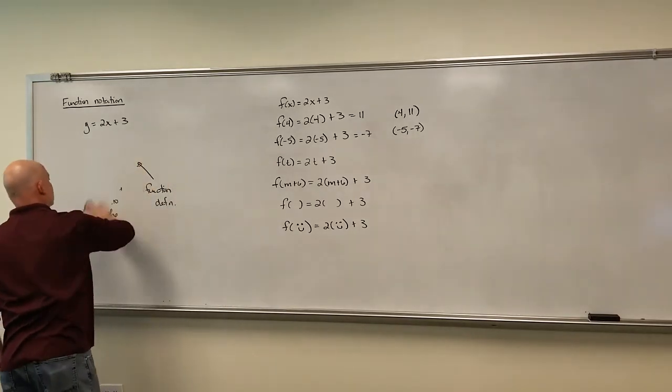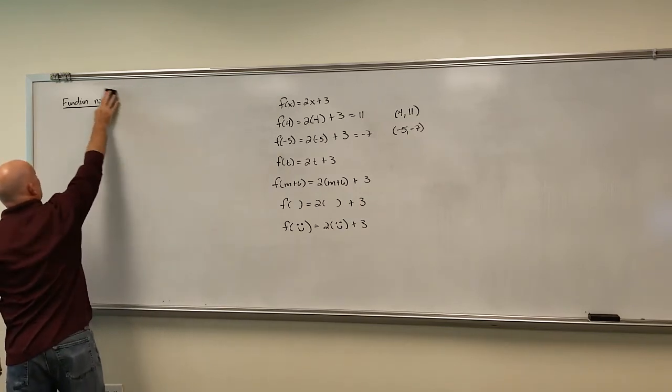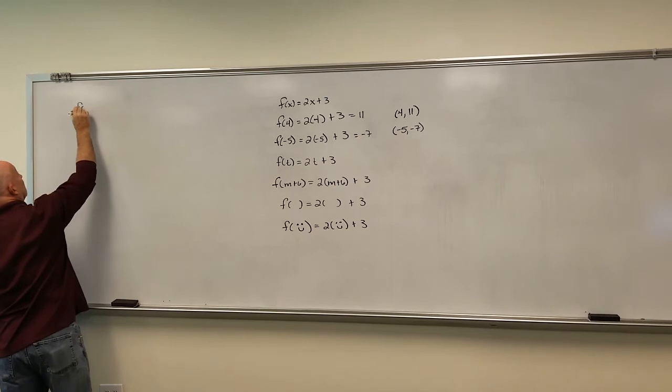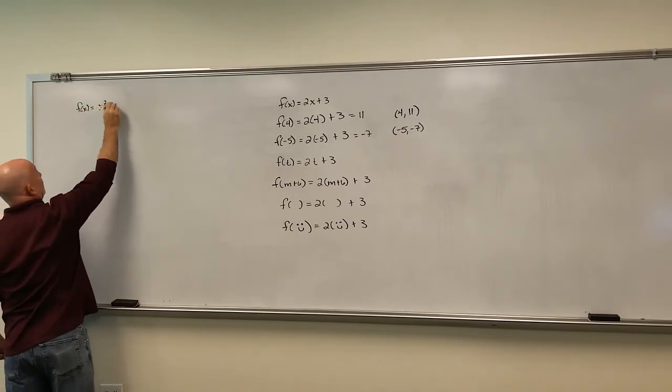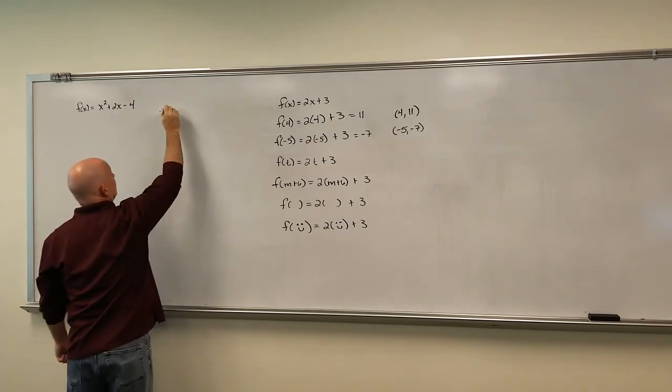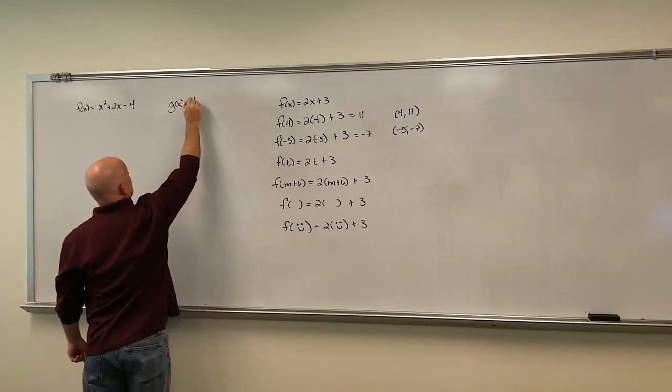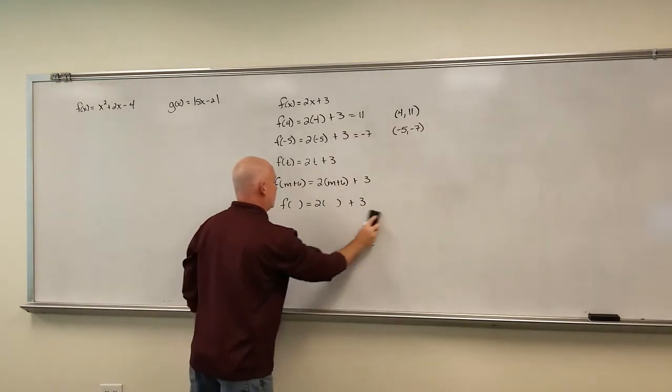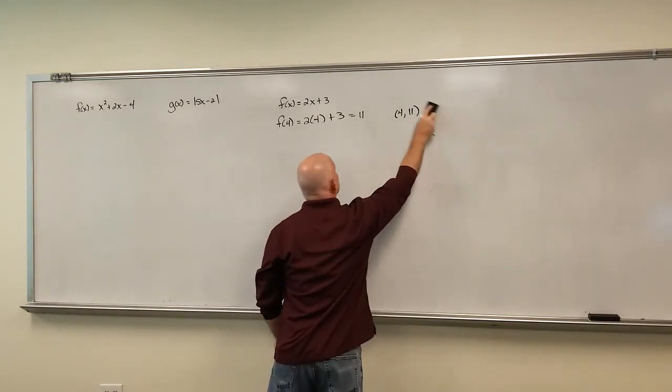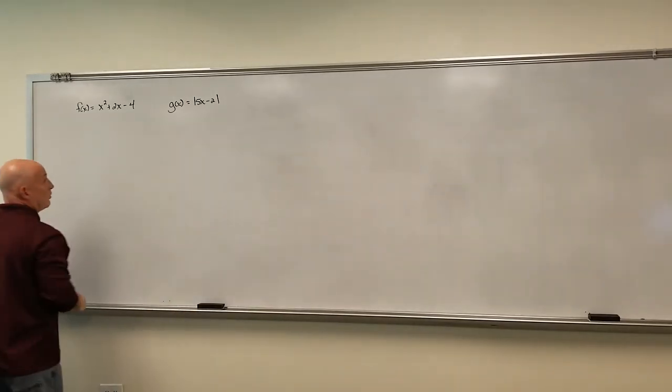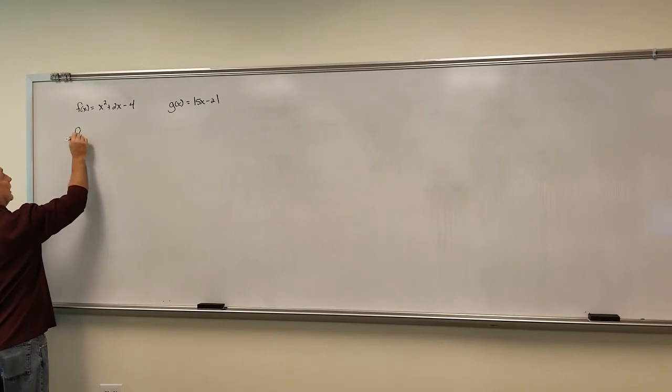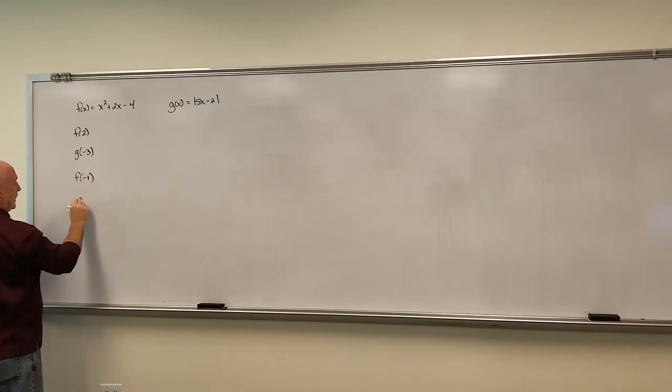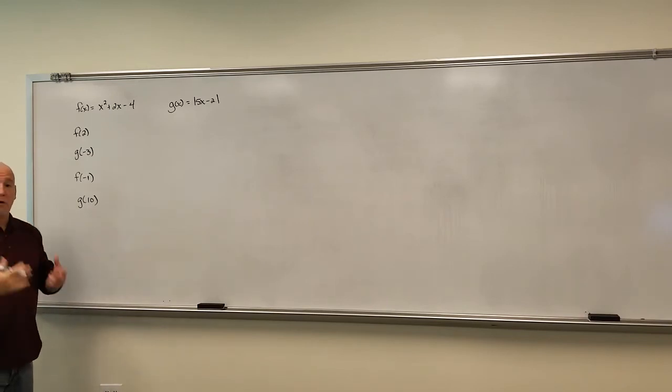All right, let's just try a quick little example of this to make sure that we understand the concept. Let's start with two new functions. Let's say f(x) = x² + 2x - 4. Let's come up with a new function, so it needs a new name. Let's call this function g, g(x) = 5x - 2. Okay, so we have two new functions here, a new function f and a function named g. So I should be able to ask you a couple of questions here. What if I ask you to find f(2), let's say g(-3), f(-1), and g(10). So do me a favor, hit pause on the video right now. See if you can find these values for me real quick.